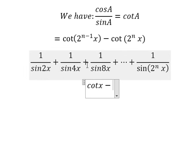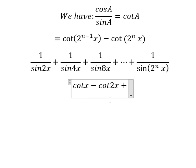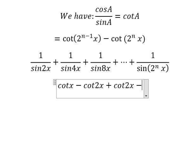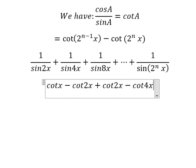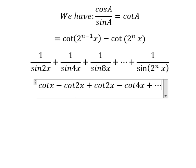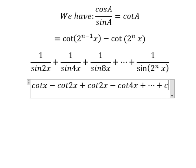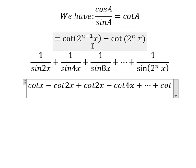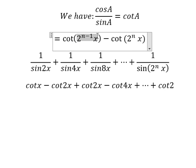Sorry, n equals to number 1 in here, so we have cotangent 2x. The next one we have cotangent 2x, and the next one we have cotangent 4x, and so on until we have cotangent 2 to the power of n minus 1 x, minus cotangent 2 to the power of n x.